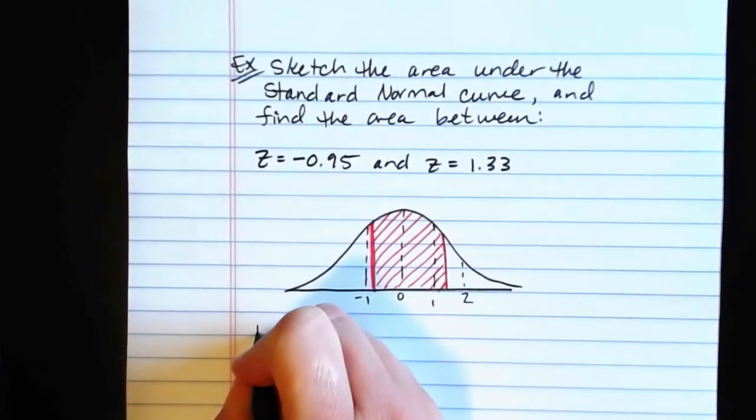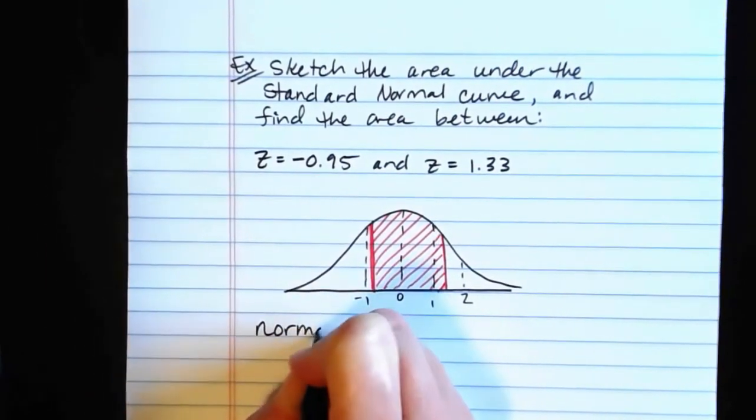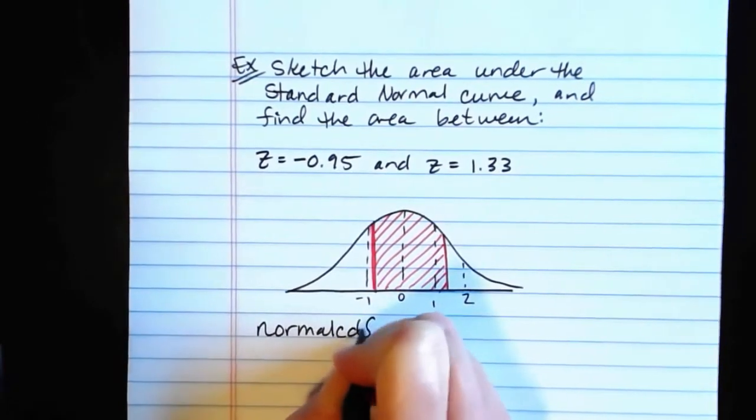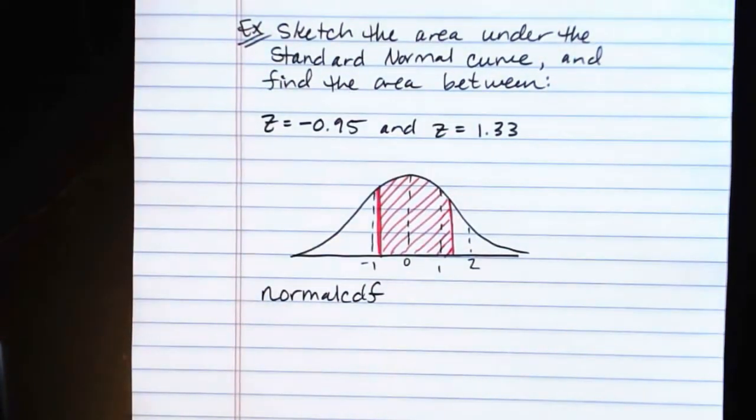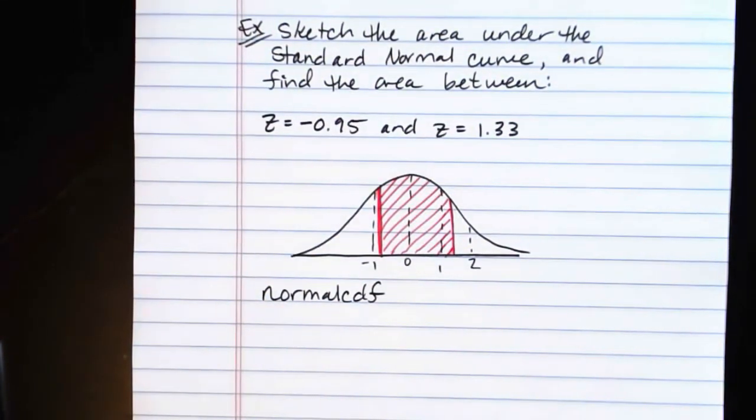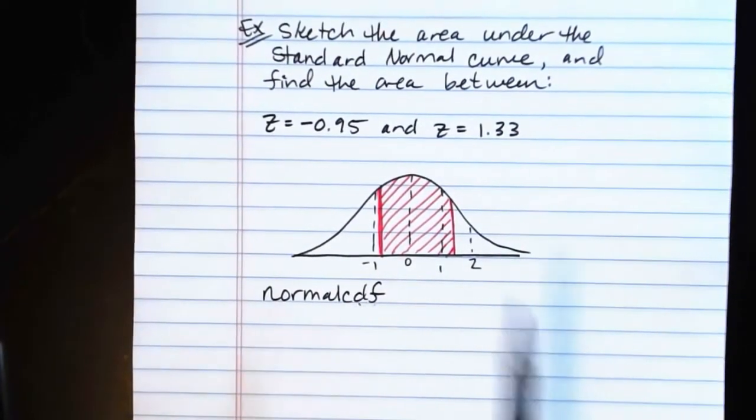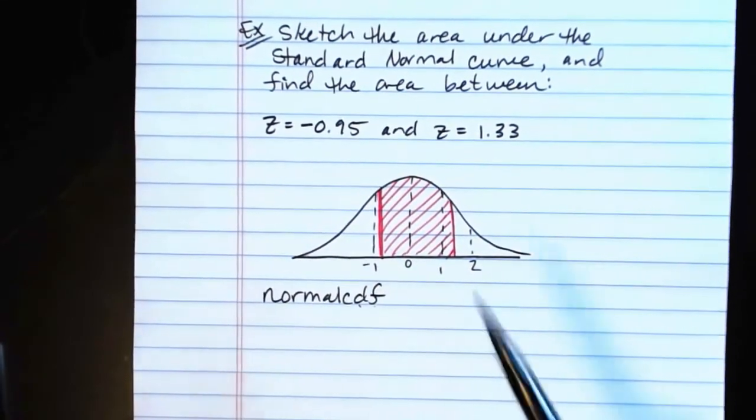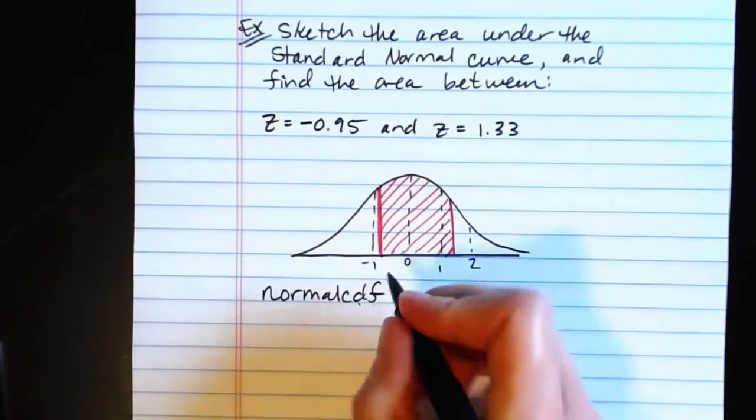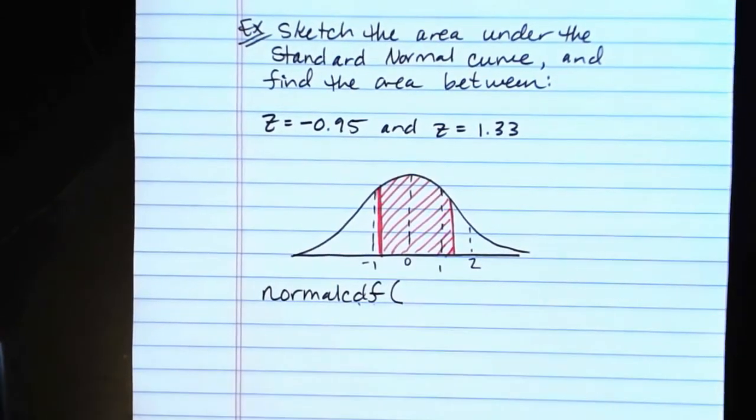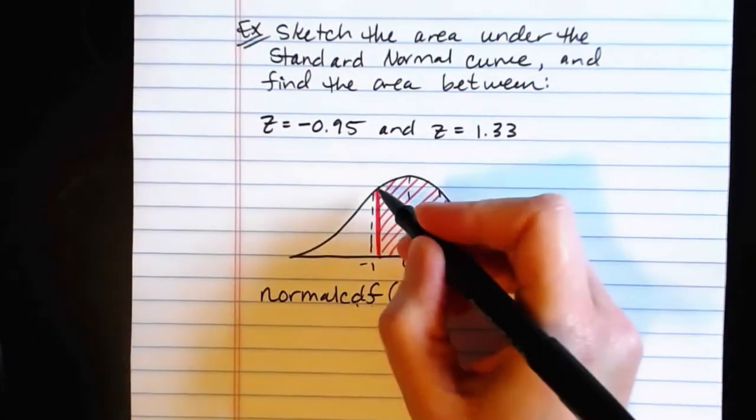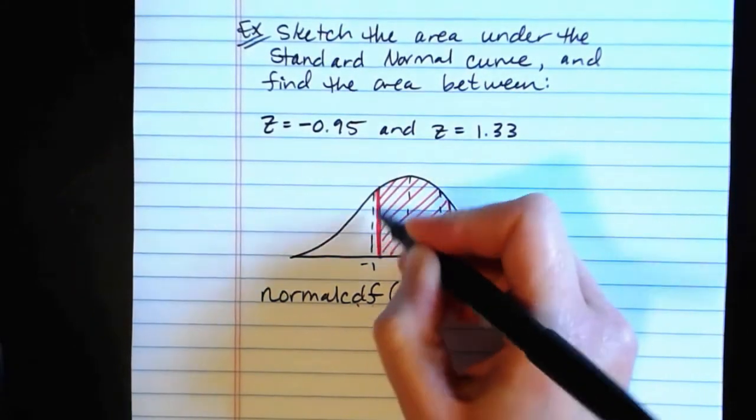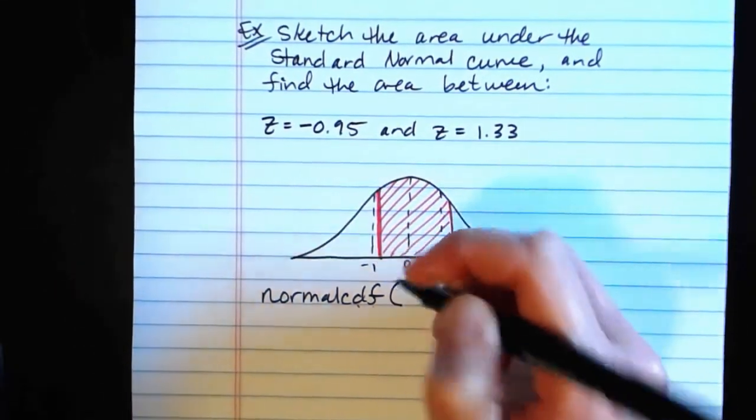So where we're going to put this into the calculator is into a program called NormalCDF, very similar to what we did with the binomial PDF and CDF, but we're going to be dealing with NormalCDF, Cumulative Density Function, because we want an area under a big range of the normal curve. And your calculator is going to want two inputs here.